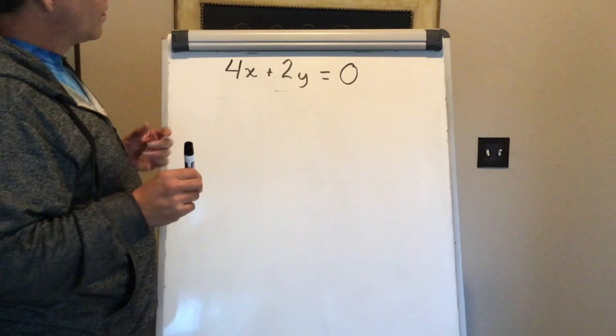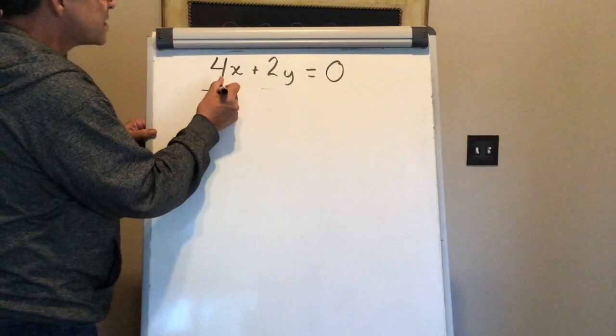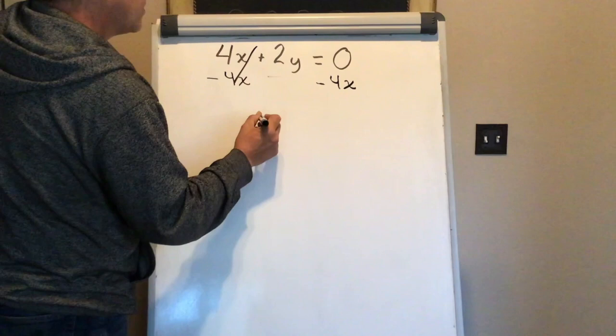So to do that, first I'm going to subtract 4x from both sides of the equation. So we have 2y is equal to negative 4x plus 0.